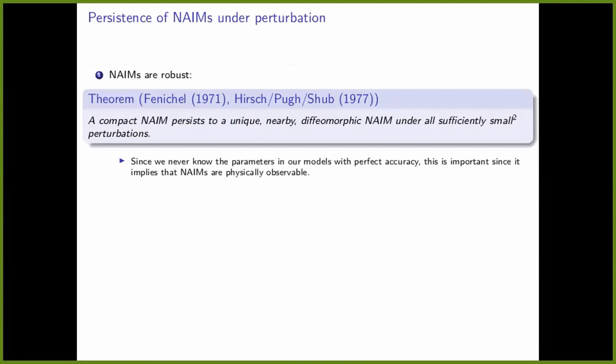The main fact about NIMs — the first main fact that makes them worthy objects of study — is that they're robust under perturbation. If you take a vector field which has a NIM and do small C1 perturbations, then there's a neighborhood in the space of vector fields such that for any perturbed vector field in that neighborhood, there will be a unique compact NIM near the original NIM and diffeomorphic to it. This is important because we never know our model parameters perfectly, so NIMs should be physically observable and robust targets for control.